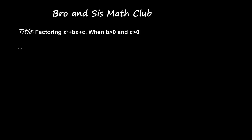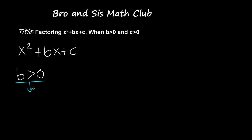So basically we're going to be having a trinomial that's going to have x squared plus bx plus c. Now in this trinomial, b is going to be greater than 0, so that means b is going to be a positive number.